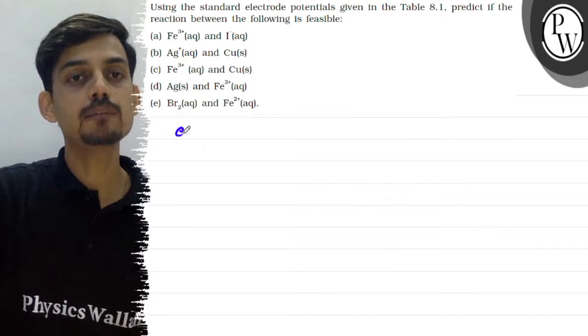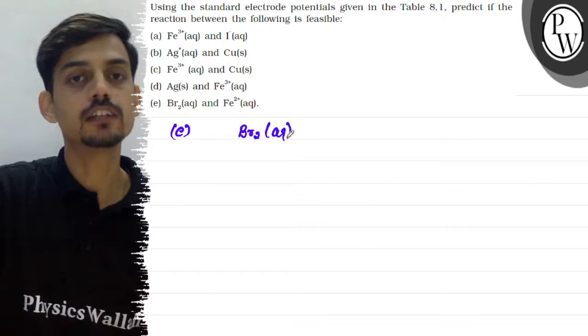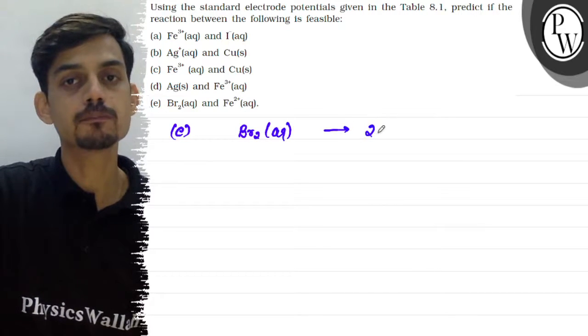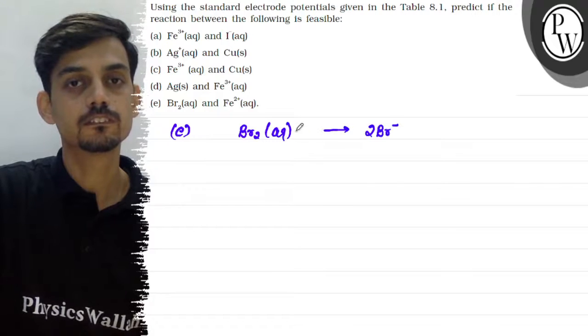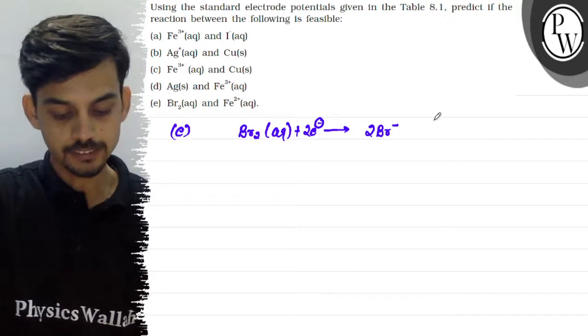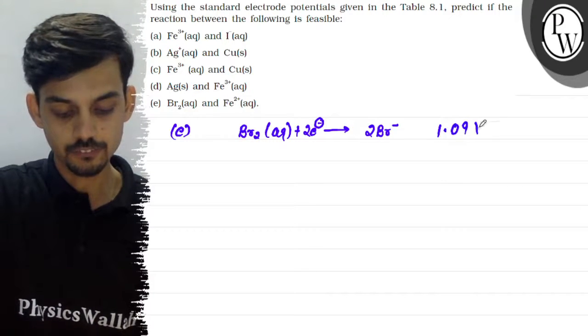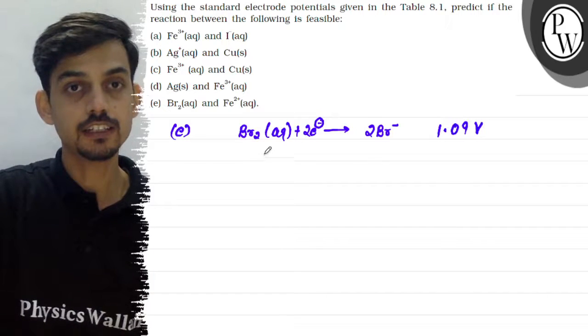And when we take the fifth pair. So fifth me humare paas Br2 hai. And the Br2 will get reduced into Br minus. So the reduction potential we have given is 1.09 volt, 1.09 volt.